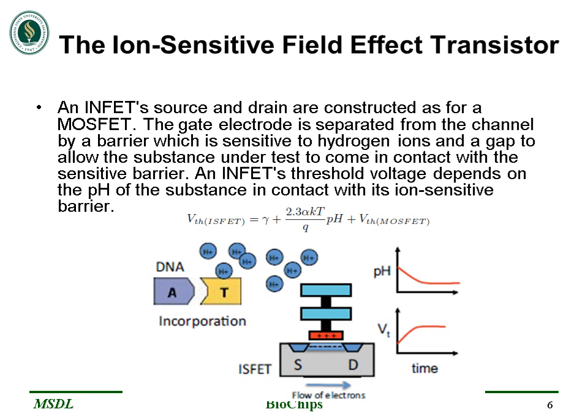An INFET source and drain are constructed as for a MOSFET. The gate electrode is separated from the channel by a barrier which is sensitive to hydrogen ions, with a gap to allow the substrate and the test solution to come in contact with the sensitive barrier. An INFET threshold voltage depends on the pH of the substance. As you can see from this figure, as the pH changes over time, the threshold voltage of the INFET also changes. So basically, when the ion concentration, such as H+, changes, the current through the transistor will change accordingly. Here the solution is used as the gate electrode.